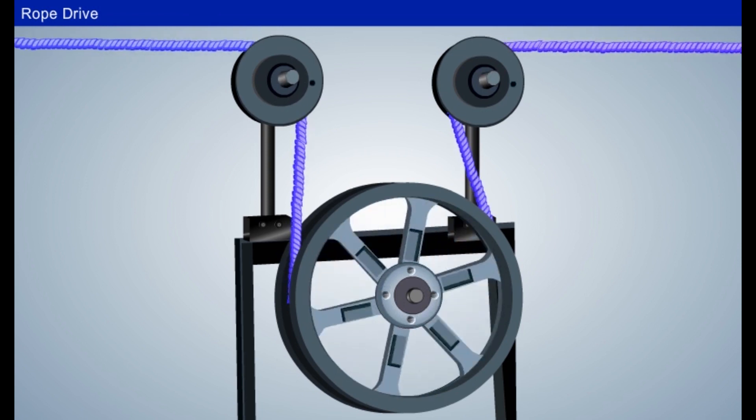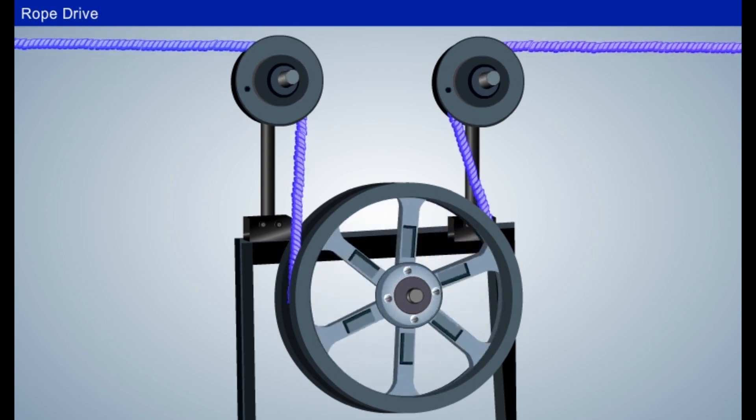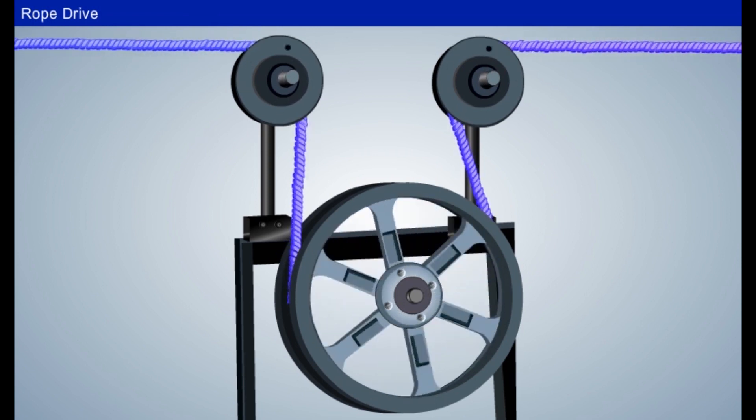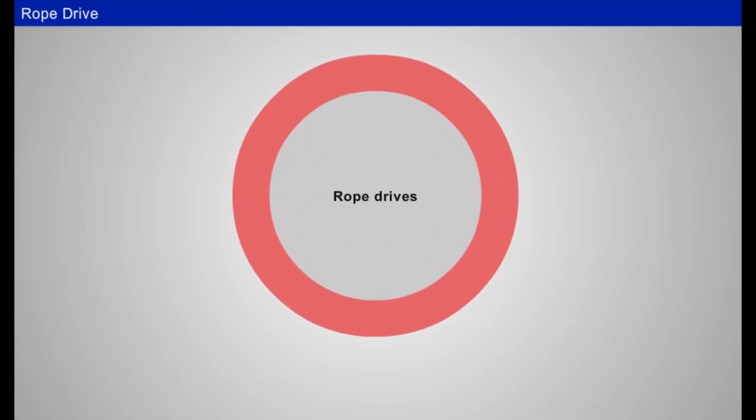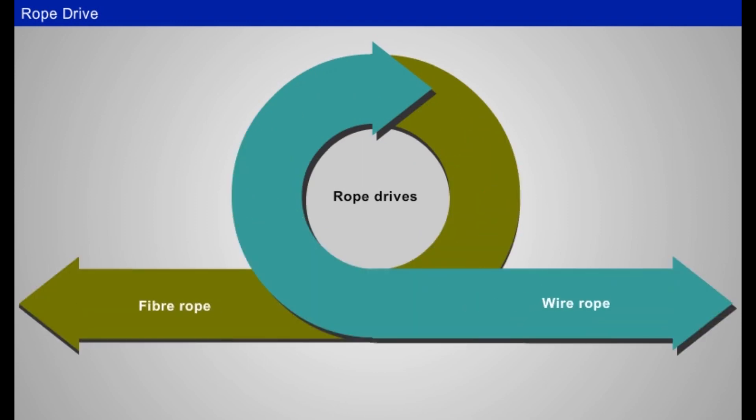Rope drives are widely used where a large amount of power is to be transmitted from one pulley to another pulley. There are two types of rope drives: fiber rope and wire rope.